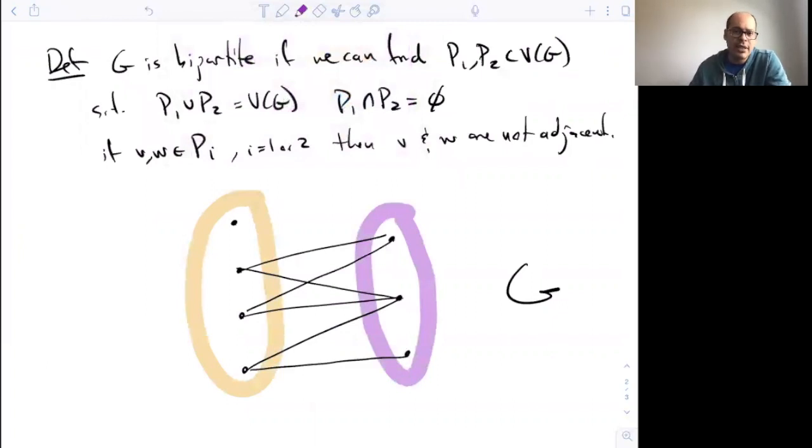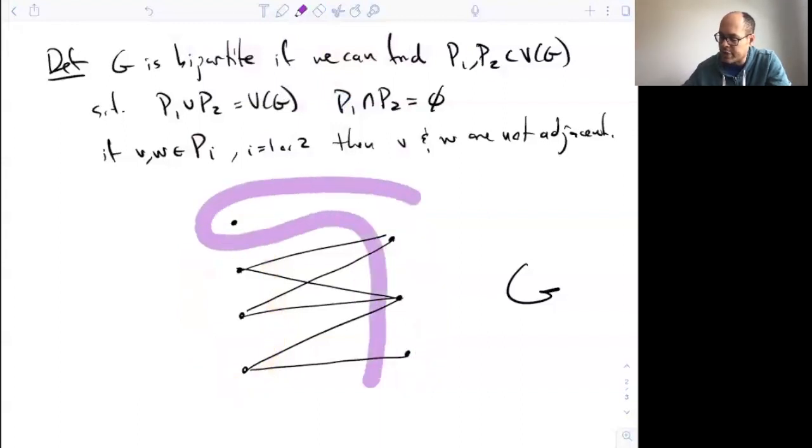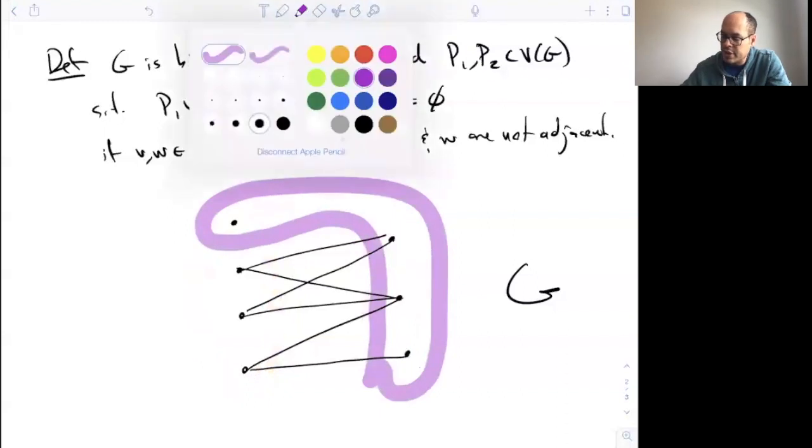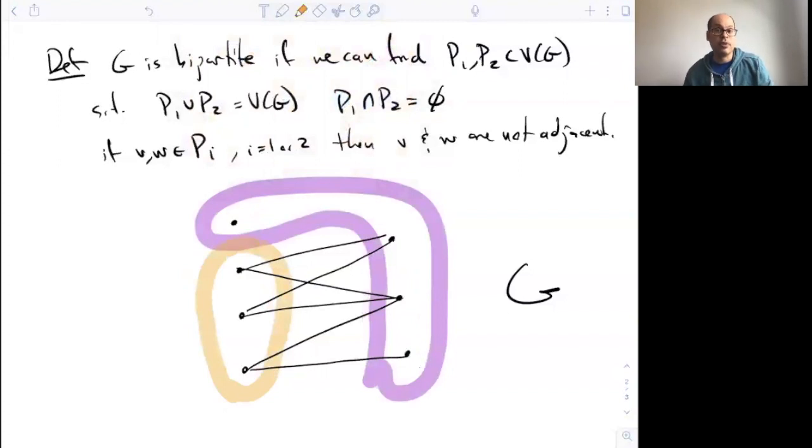Now as you can see, there might be more than one way to do this. I could just as well have made my purple bubble encapsulating this vertex and had my orange bubble be this guy over here, and again, we have the same property. So this is a bipartite graph, and you might say it's bipartite for two different reasons. To say that it's bipartite just means that there is some way of making this decomposition, but there might be more than one way of doing it in general.